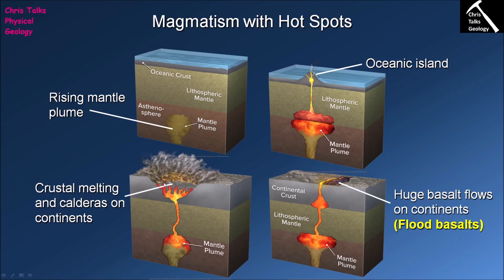This large magma chamber ends up feeding multiple volcanic vents on the surface, producing a very volcanically active area — think of somewhere like Yellowstone National Park. As magma pours out onto the surface it is removed from the magma chamber, so the volume of magma in the chamber steadily decreases. When the magma chamber runs low, the roof of the magma chamber drops down to fill the empty space, producing a depression on the surface of the Earth which we call a caldera. This is the other possibility that can occur when a hotspot interacts with continental crust.